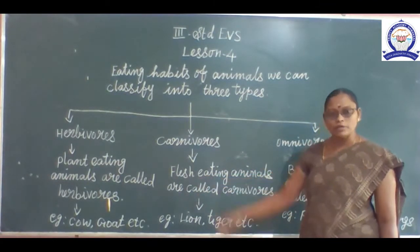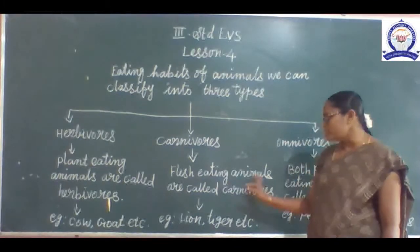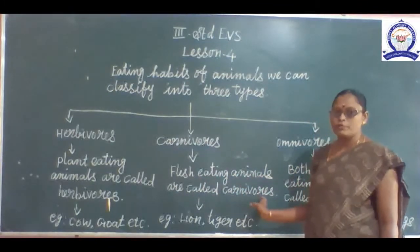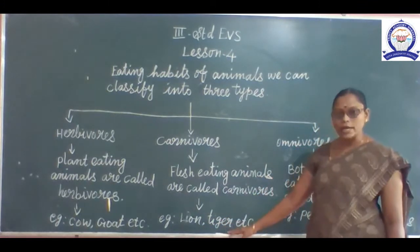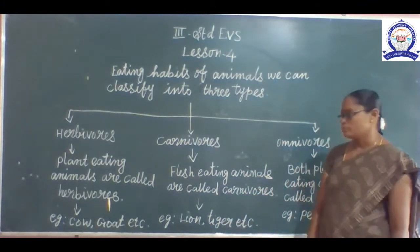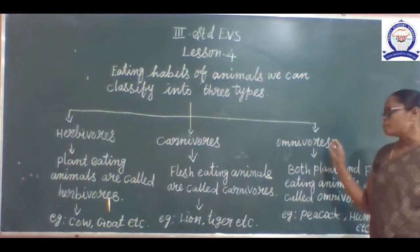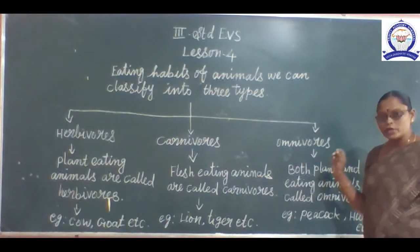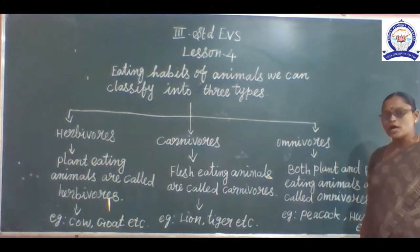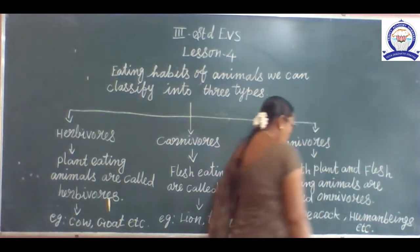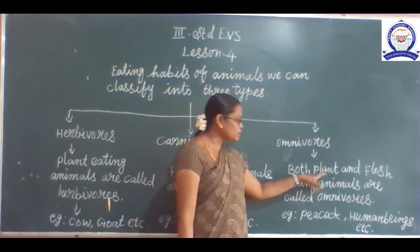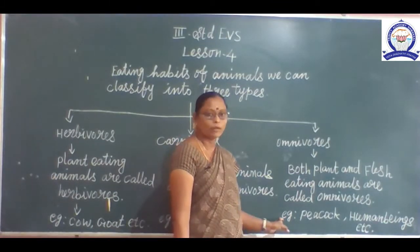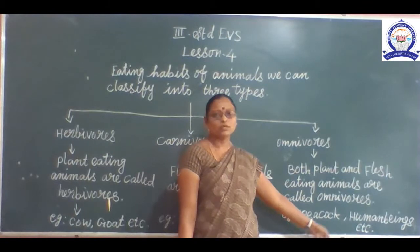What is meant by carnivores? Flesh-eating animals are called carnivores — for example, lion, tiger, cheetah, etc. And the last one is omnivores. Both plant and flesh-eating animals are called omnivores. For example, peacock, human beings, crow, etc.